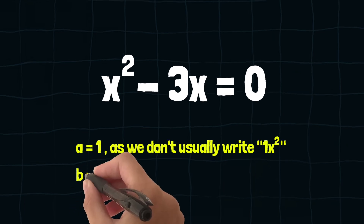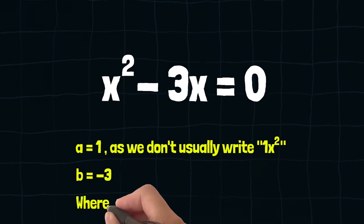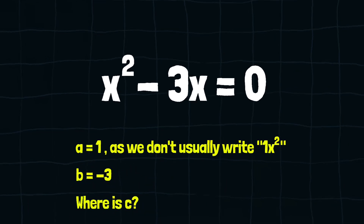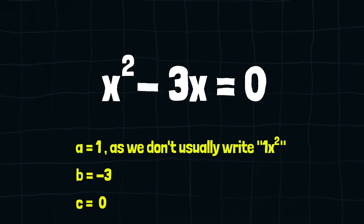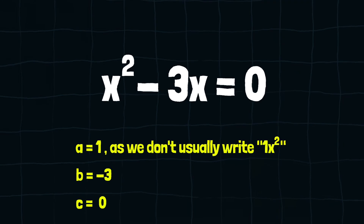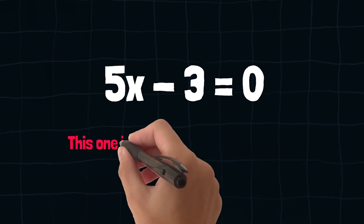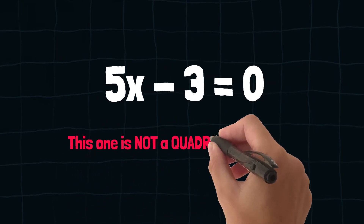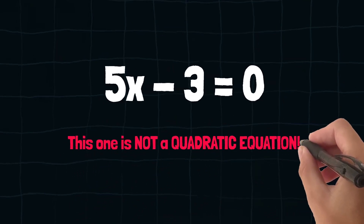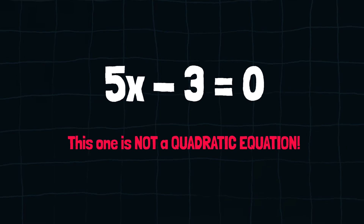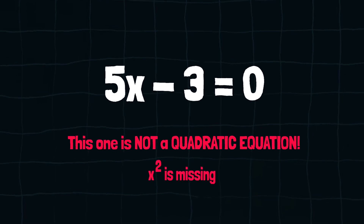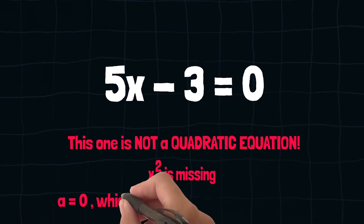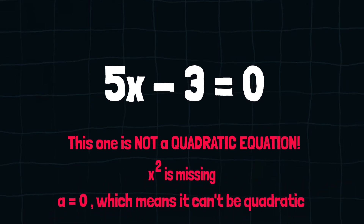b is equal to negative 3. And where is c? Well, c is 0, so it is not shown. Finally, we have the last example. Oops — this one is not a quadratic equation. It is missing x squared. In other words, a is 0, which means it can't be quadratic.